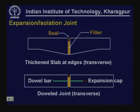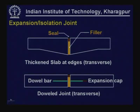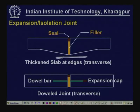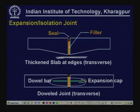If there is no load transfer mechanism between these two slabs — meaning we are not providing any dowel bars — then to account for the excessive stresses that are going to be close to the joint, one can either thicken the slab near the edges, or alternately provide dowel bars. We can provide an expansion cap here to permit the lateral movement of the slab when it is trying to expand.